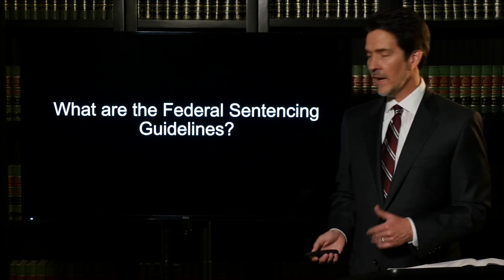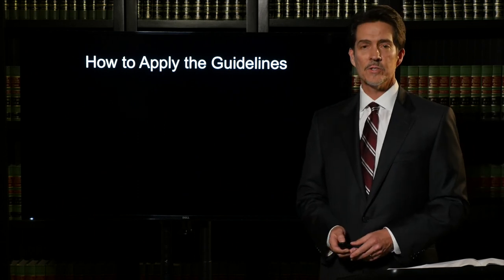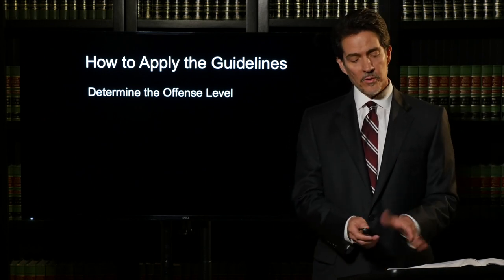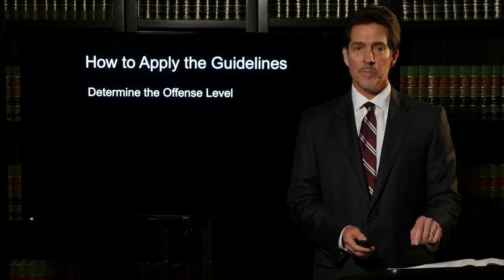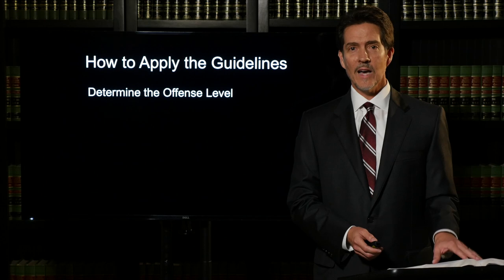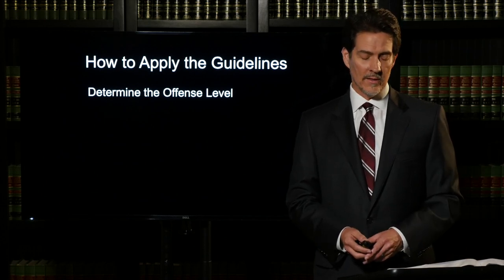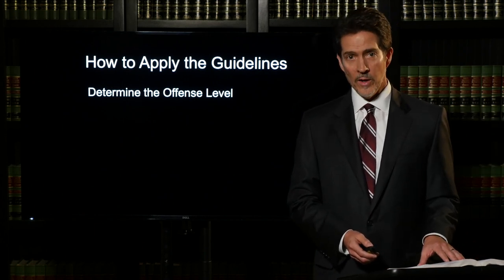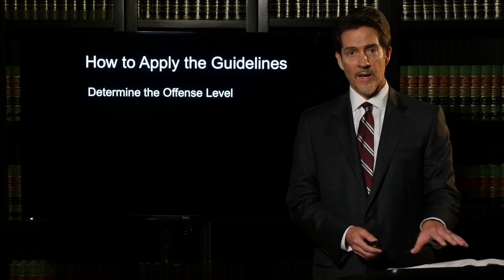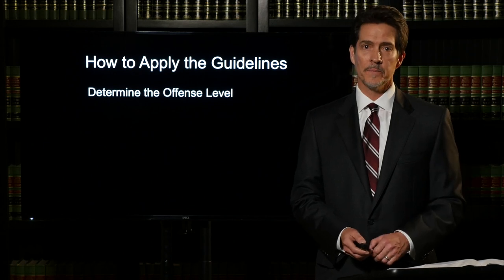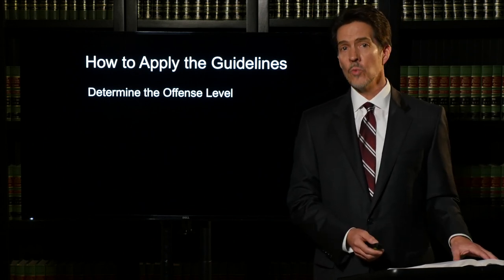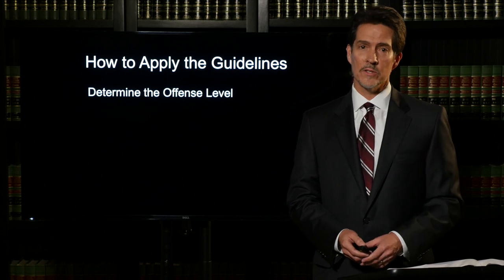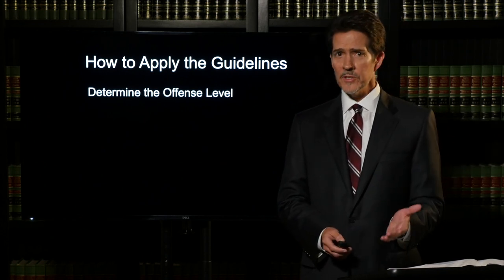Let's drill down and talk about how to apply the federal sentencing guidelines to a particular case. The first step is to determine the offense level — you go to the book or the online site and find the particular crime the person's been convicted of and see what guideline section corresponds to it. If it's a drug crime, you go to 2D1.1; if it's a fraud case, you go to 2B1.1. All of these are chapter two guideline sections that give you a starting point — the base offense level — which is just a number.